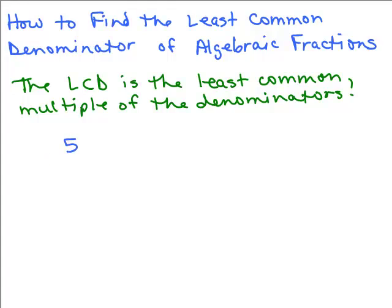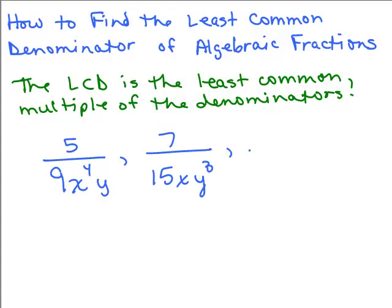Let's say you had 5 over 9x to the 4th y, and 7 over 15xy cubed, and 8 over 10x squared y to the 4th. I want to know what the least common multiple of the denominators is.